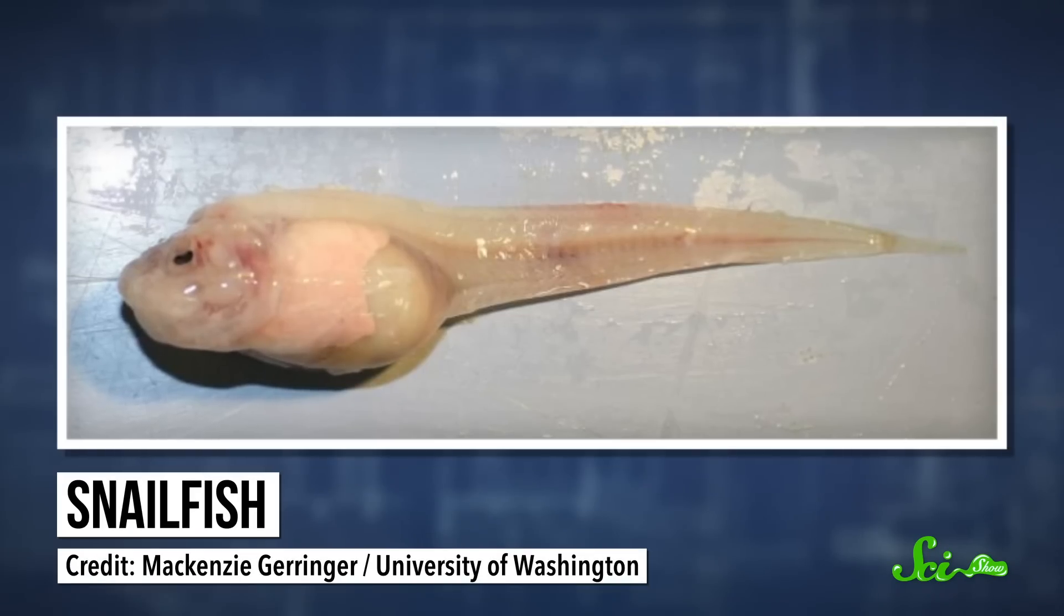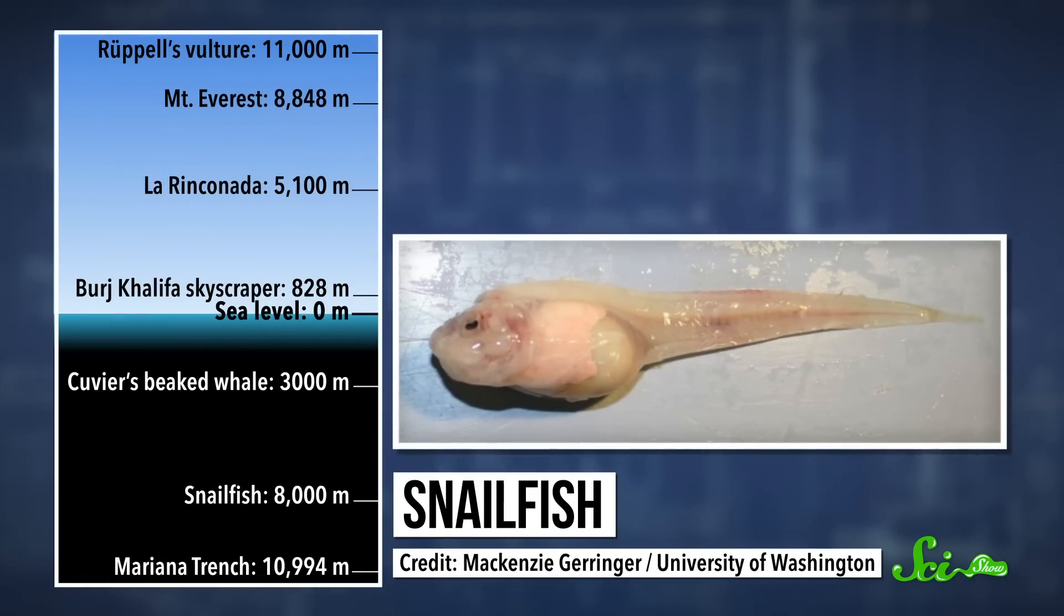In 2017, scientists found the deepest known vertebrate, a pink, wiggly snailfish, at over 8,000 meters down in the Mariana Trench, the deepest part of the ocean. The fish doesn't have that oxygen problem that whales and seals do, since it gets its oxygen directly from the water. But there is another problem—pressure.